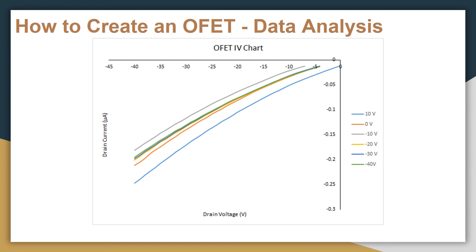After running the characterization method previously described, we should develop a voltage versus current curve for the drain to source. The current chart shown here is the drain voltage versus drain-to-source current for the organic field-effect transistor device previously fabricated. This is done at different gate voltages which are held constant. Theoretically, as we increase the magnitude of the gate voltage, the current should increase — for the minus 10 volts case, this can be seen to be true.